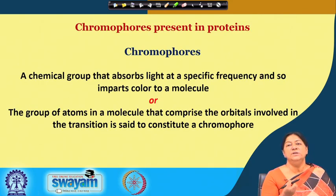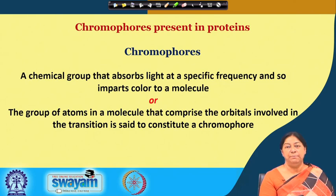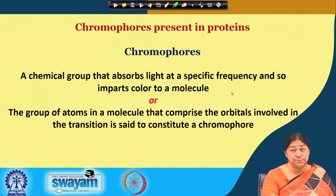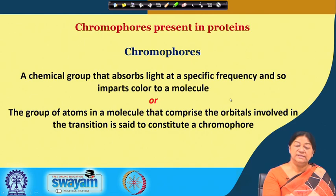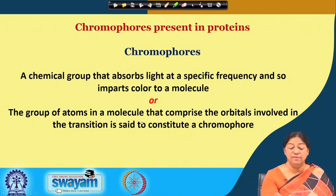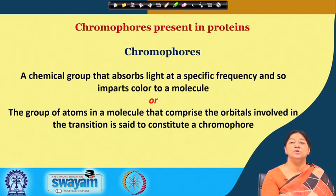The component present in the sample that absorbs the light is called a chromophore — the chemical group that absorbs light at a specific frequency or wavelength and imparts color to the molecule. The group of atoms comprising the orbitals involved in the electronic transition is the chromophore corresponding to that specific energy and wavelength.